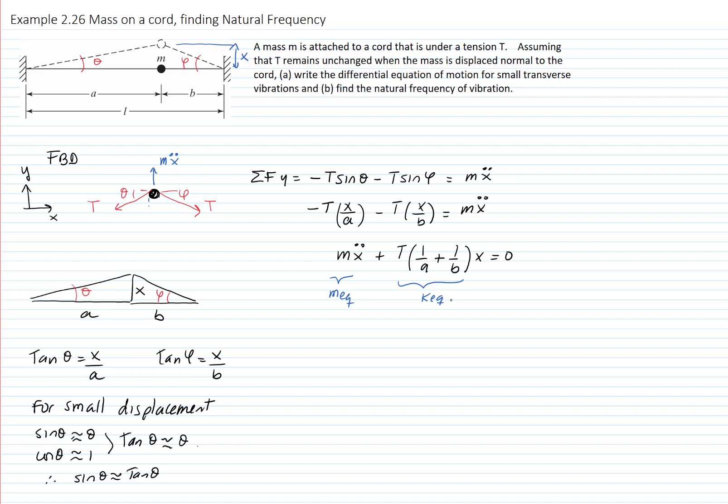The natural frequency is then equal to T that multiplies 1 over A plus 1 over B, and that divided by M. And that's the result of the problem for the natural frequency of the system.